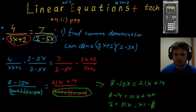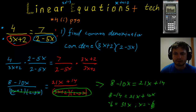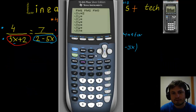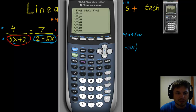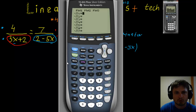So x equals minus 6 divided by 41 — that's the final answer from the manual method. It's quite time-consuming, so now let's solve this using the GDC, which saves a lot of time. Go into the Y= button and enter both sides of the equation as Y1 and Y2.